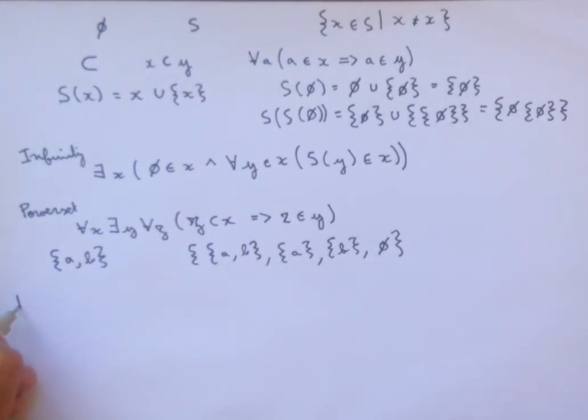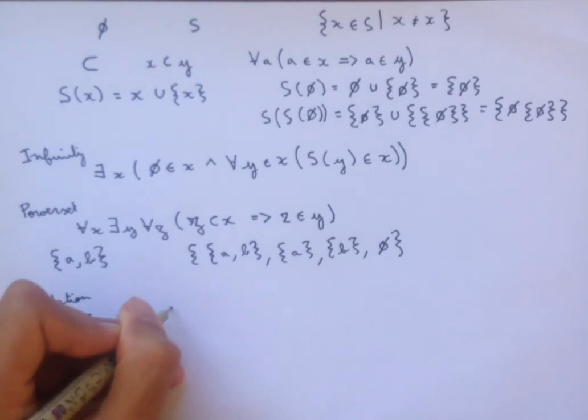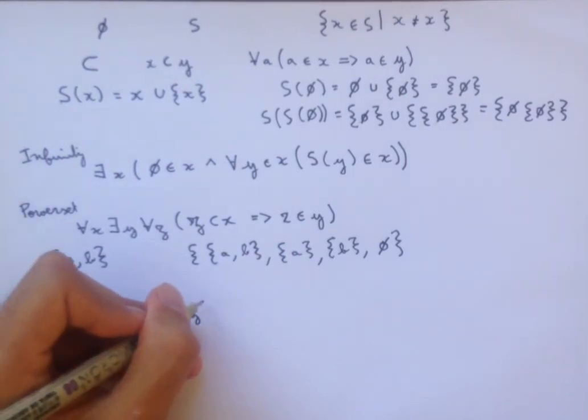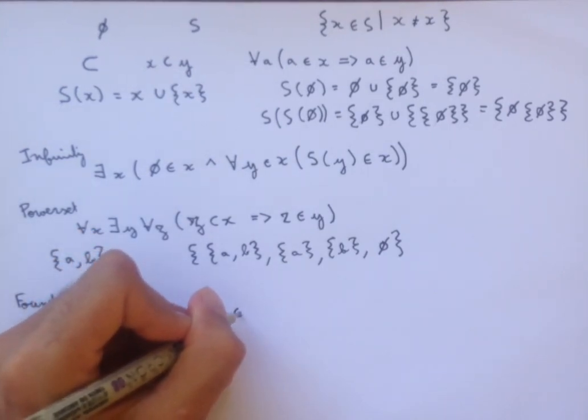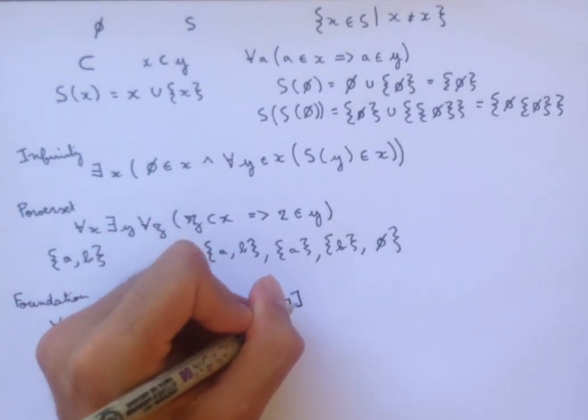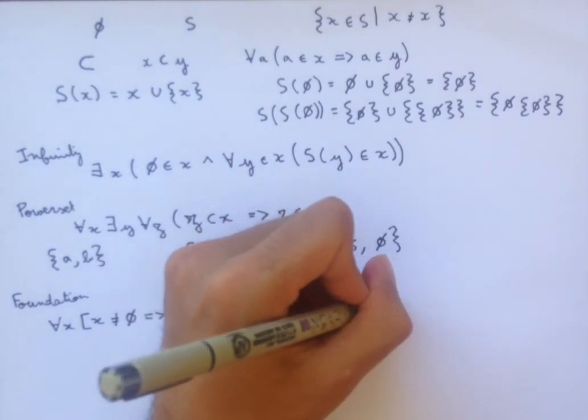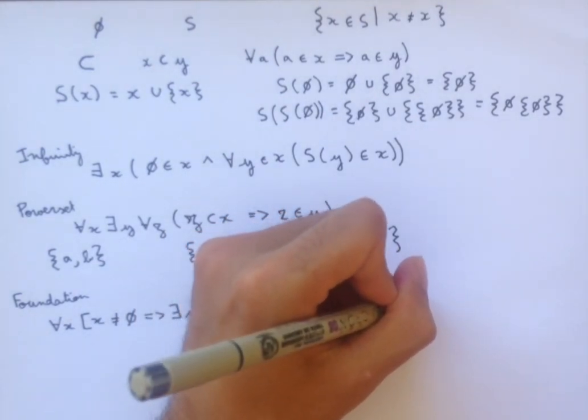And finally, the last axiom that we're going to use for a little while is the axiom of foundation, which says that for all X, if X is not equal to the empty set, then there exists Y such that Y is an element of X, and there does not exist Z such that Z is an element of X and Z is an element of Y.